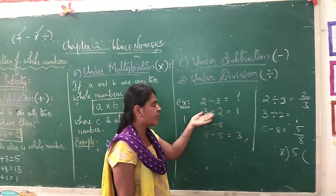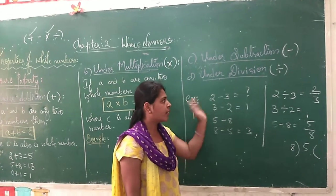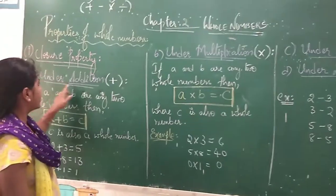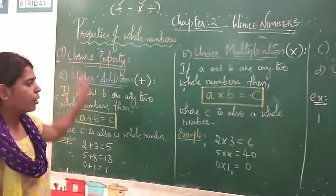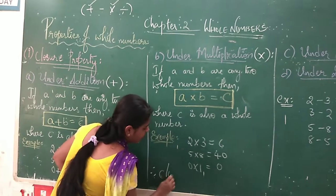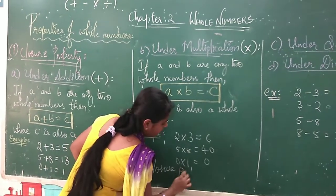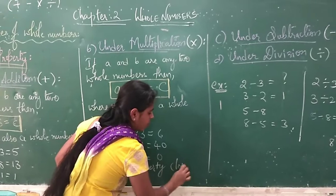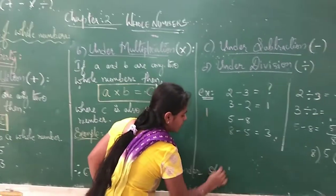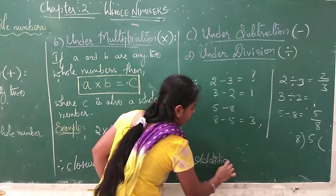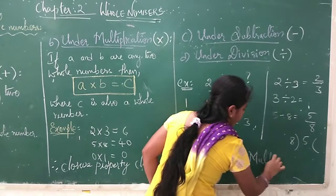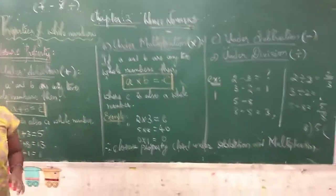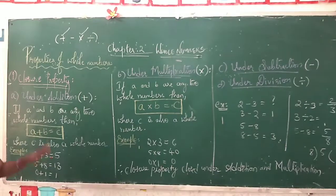So you can see that only addition and multiplication are satisfied under the closure property. Therefore, closure property is closed under addition and multiplication. But it is not closed under division and subtraction. So it is satisfied for addition and multiplication only.